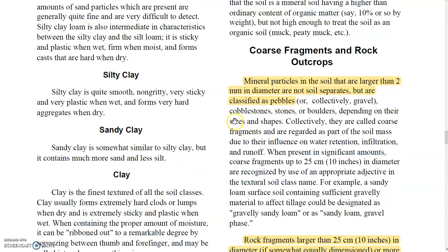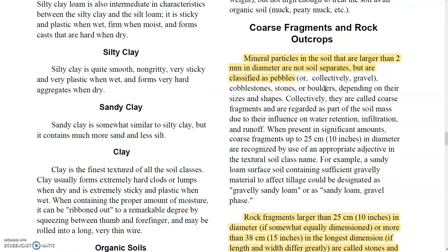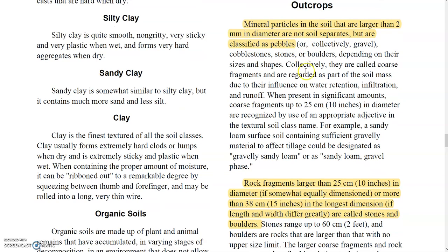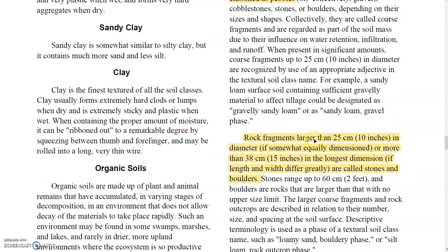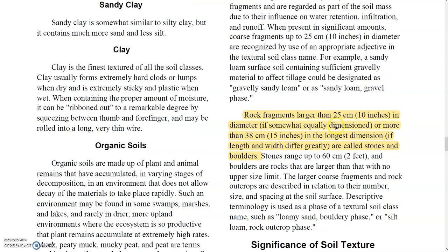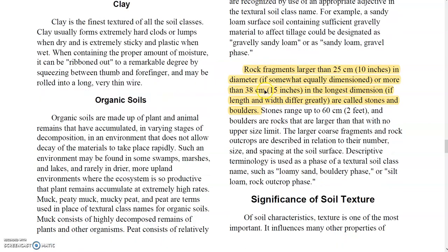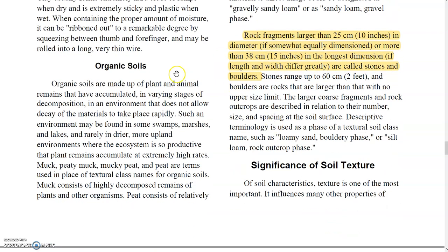Apart from sand, silt, and clay, soil sometimes contains coarse fragments. Particles larger than 2 mm are called pebbles, cobblestones, or boulders. Rock fragments with particle sizes greater than 25 centimeters are considered rock fragments, and even fragments around 38 centimeters are also classified as rock fragments.